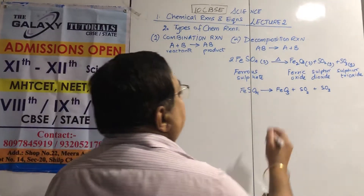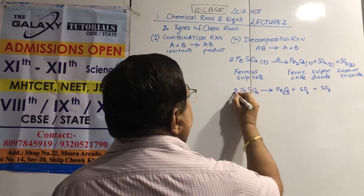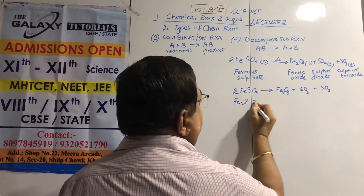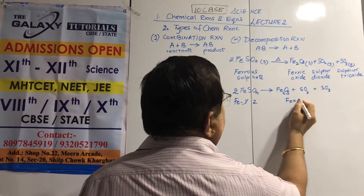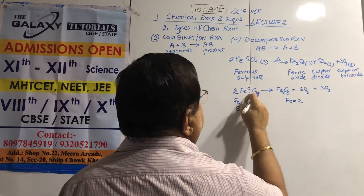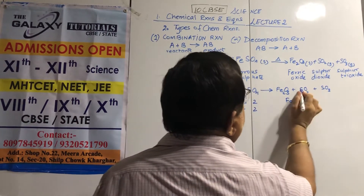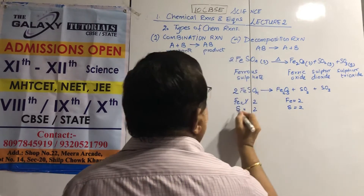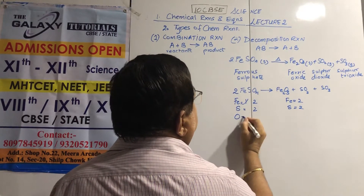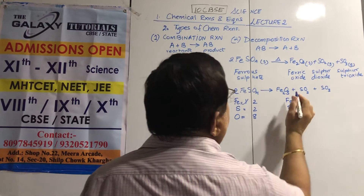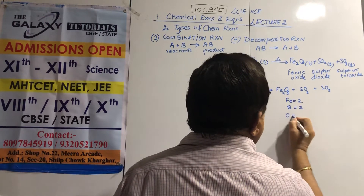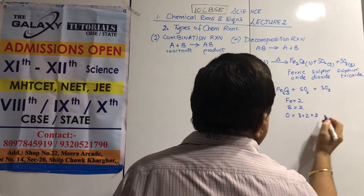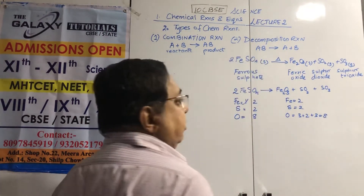Since I have Fe2O3, I put a 2 before FeSO4. Fe: 2 on both sides. S: 2 on both sides. Oxygen: left side 2×4=8; right side 3 + 2 + 3 = 8. Equation is balanced.